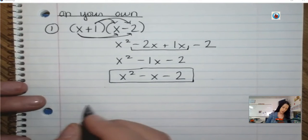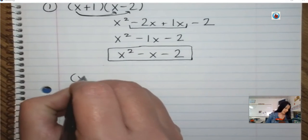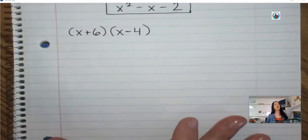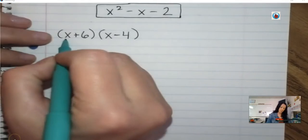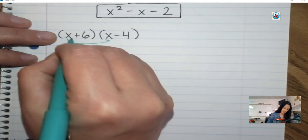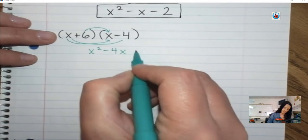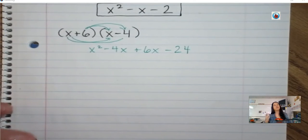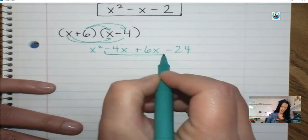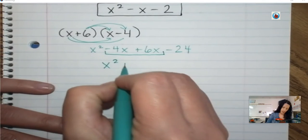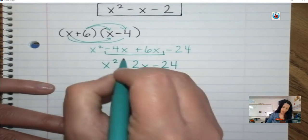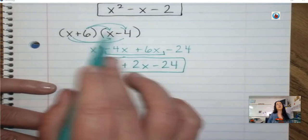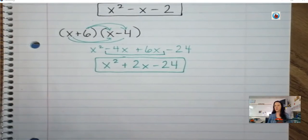We're going to do another one: x plus 6 and x minus 4 — multiply x plus 6 and x minus 4. x squared minus 4x plus 6x minus 24. I can combine my negative 4x and my positive 6x to get x squared plus 2x minus 24. Just be careful — you have a positive 6 times a negative 4, so make sure you have minus 24 at the end. That's the biggest issue I see: the symbols.